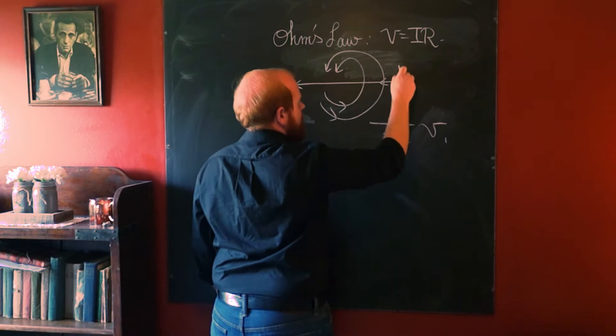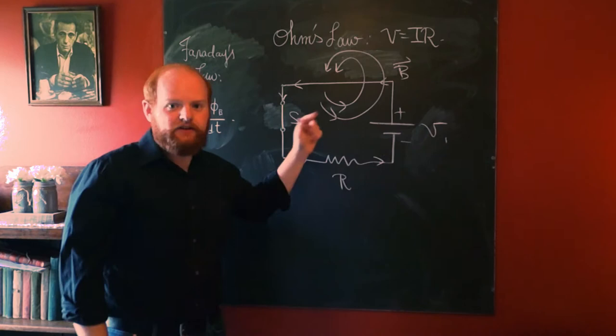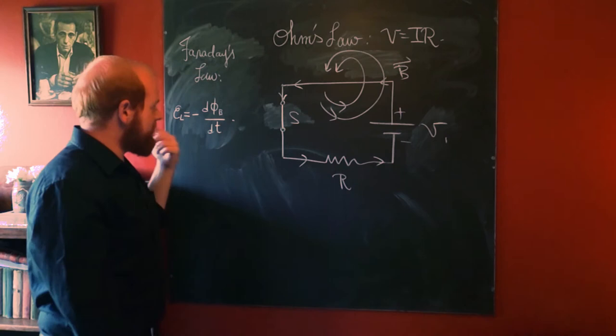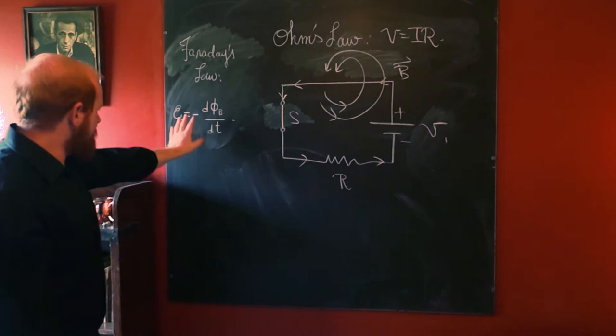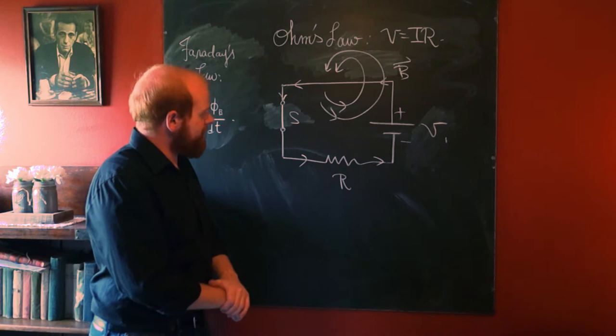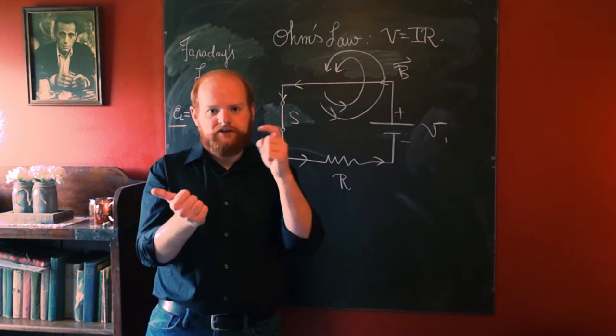Faraday's law says that for a loop like this one, a change in magnetic flux through it creates an EMF. The magnetic field starts at zero and arises as current begins flowing, giving a nonzero dΦ/dt, which creates an induced EMF in the wire — we'll call it ε_L. The direction of that induced current is determined by Lenz's law: the induced current's magnetic field opposes the change in flux that caused it.